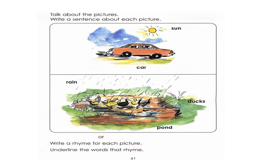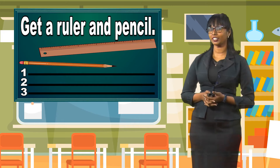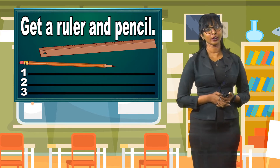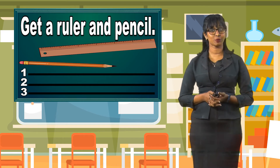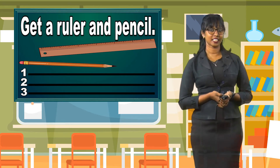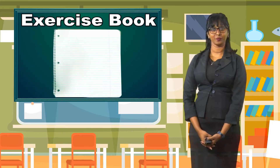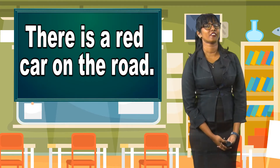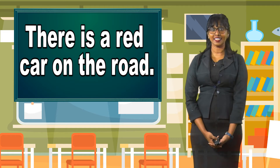Are you ready? Now here is what I want you to do. In order to do this exercise with me, I want you to go quickly and get a ruler and a pencil. You are going to take your ruler and draw three lines in your textbook, because we are going to write our sentences on the lines. If you do not have the textbook, you can write in your exercise book. You can say, there is a red car on the road. That is a very nice sentence.